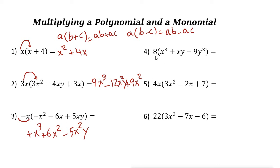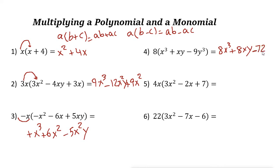Next one: 8 times (x³ plus xy minus 9y³). 8 times x³ is 8x³, plus 8 times xy is 8xy, minus — because 8 is positive and 9 is negative — 8 times 9 is 72, so minus 72y³.